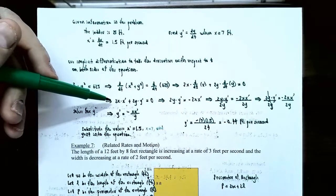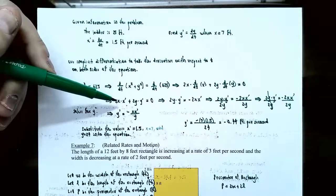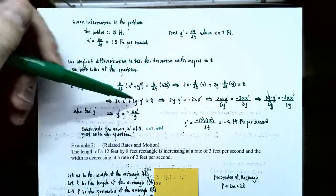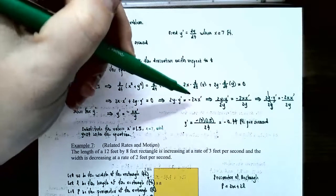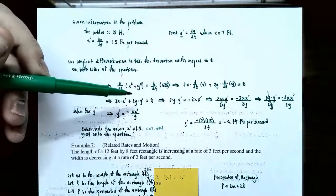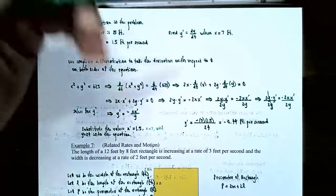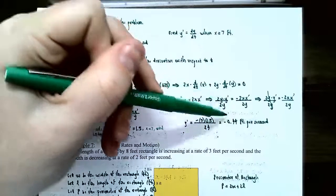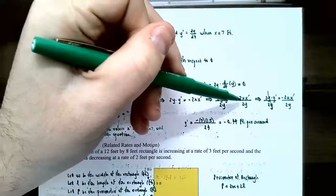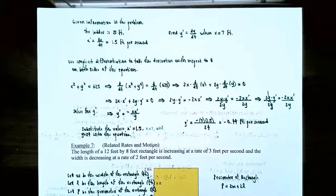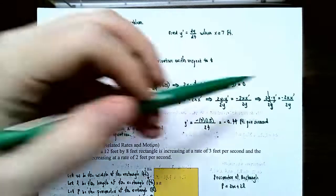We can solve for Y prime by moving 2X times X prime to the other side: 2Y times Y prime equals negative 2X times X prime. Dividing both sides by 2Y gives Y prime equals negative X times X prime divided by Y, after the 2s cancel. The advantage of solving for Y prime first is that we can now simply plug in the known values.